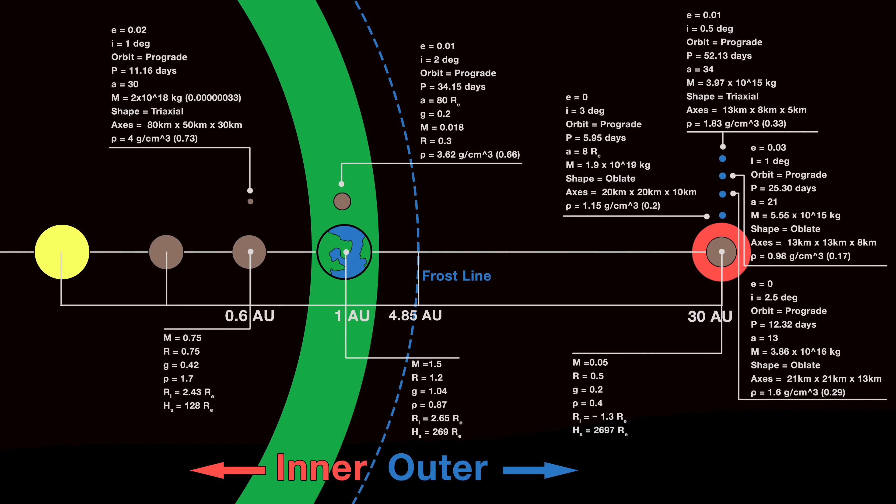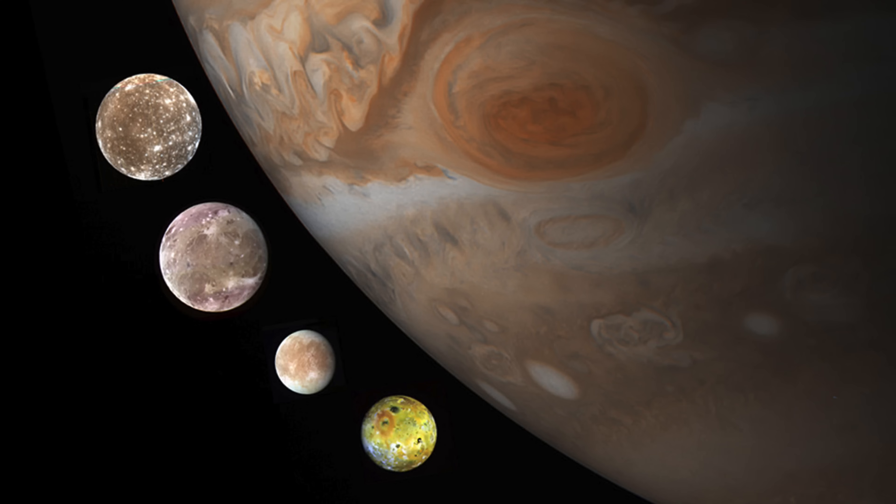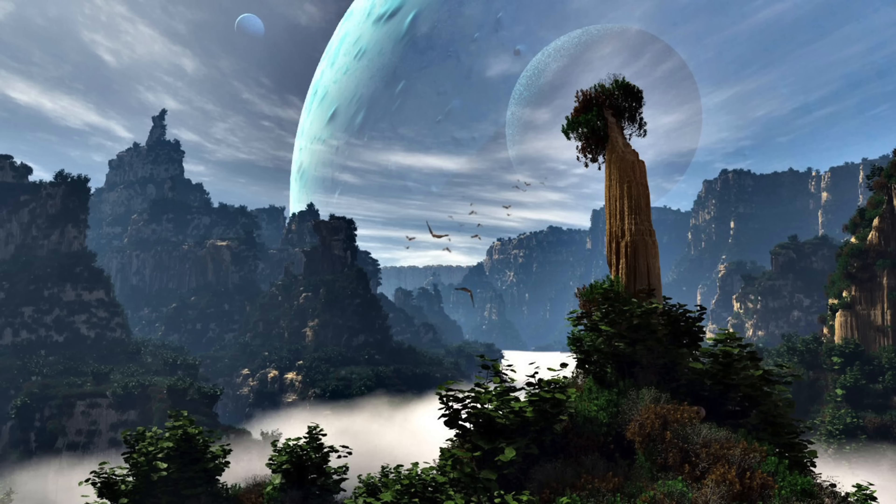And there you have it. One terrestrial planetary system all decked out in moons. Next time we'll look at gas giant moon systems and the possibility of habitable moons. Stay tuned.